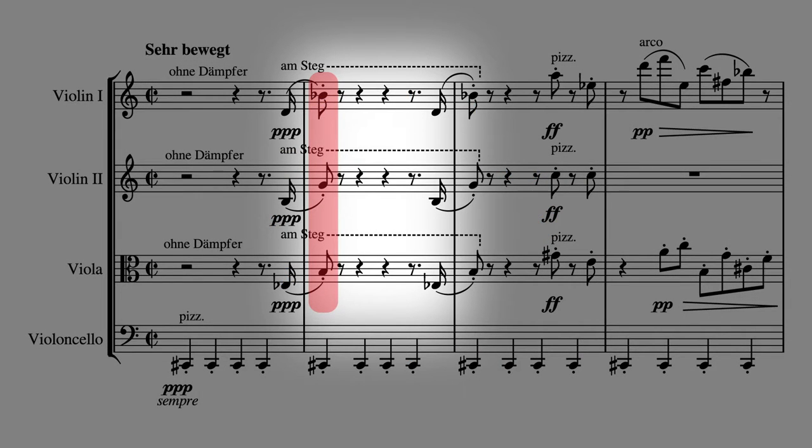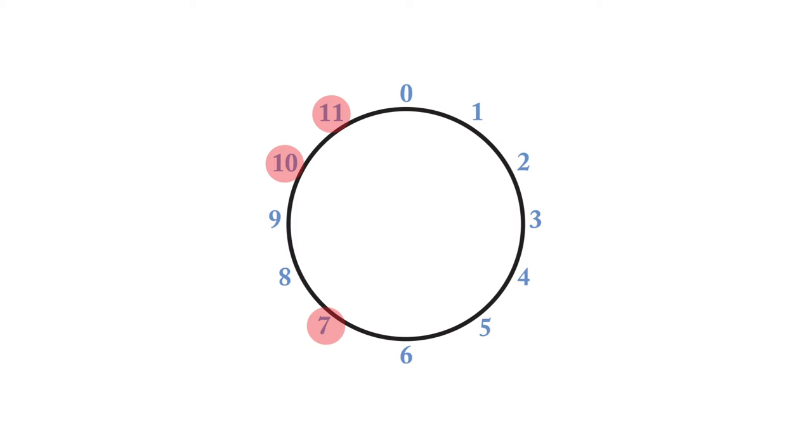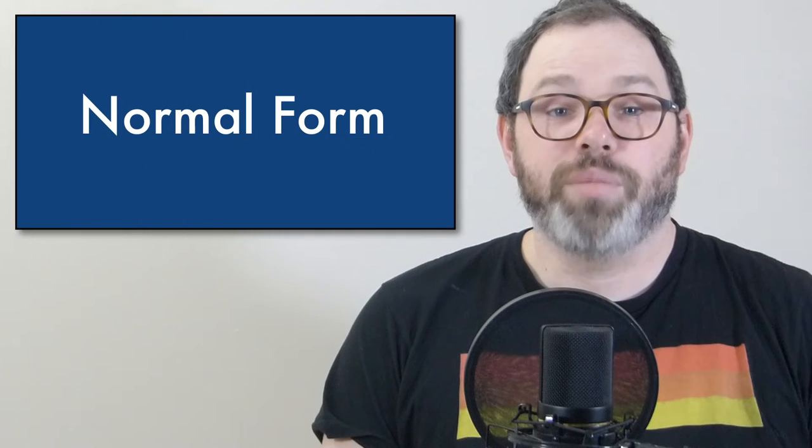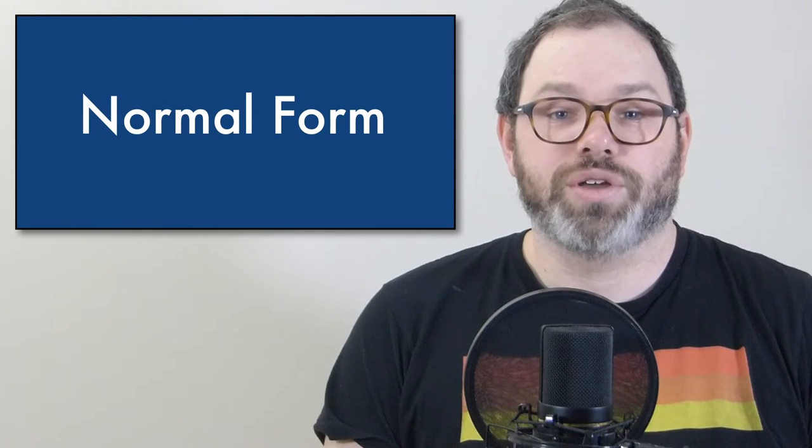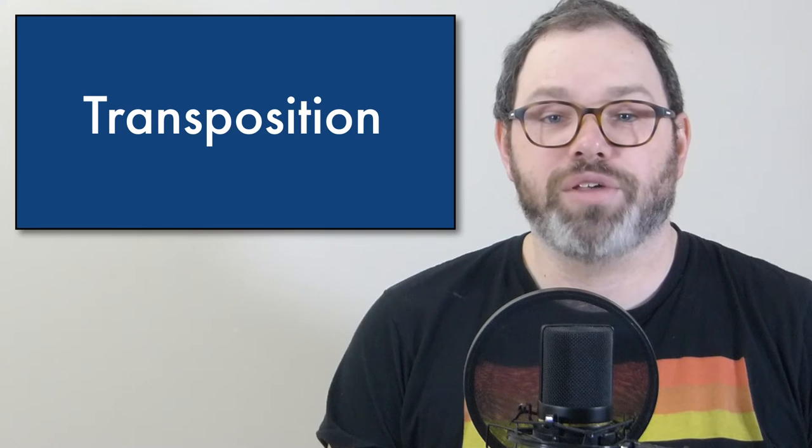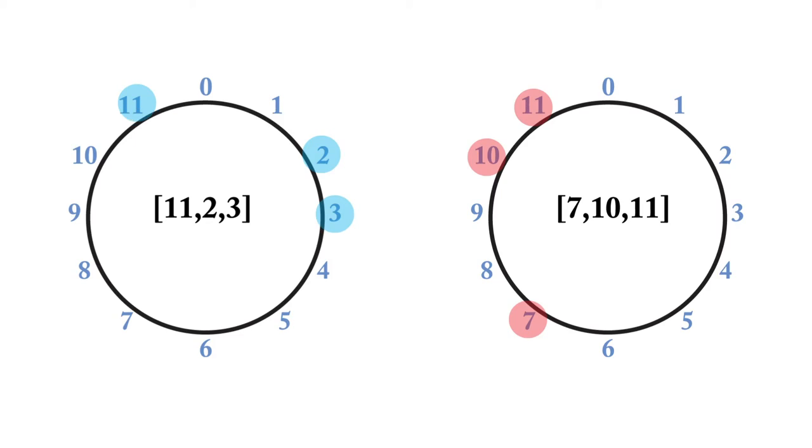Looking at the next trichord, we have the pitches B, G, and B-flat, or as integers, 11, 7, and 10. When we plot these on the clock face, we can quickly see that the ordered pitch class intervals between adjacent pitch classes are again 3, 1, and 8 semitones. This makes the normal form of this pitch class set 7, 10, 11. You may have noticed that the ordered pitch class intervals in these two trichords are the same. That's because these two pitch class sets are transpositions of one another. This is even more noticeable when you compare the two clock faces. As you can see, we would transpose the first pitch class set by 8 semitones to get to the second pitch class set. You can think of transposition of pitch class sets as turning the clock face clockwise. In our chosen analytical nomenclature, we refer to this transposition as T8, or transposition by 8 semitones.